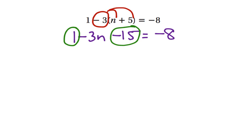So 1 minus 15, or negative 15 plus 1, gives us negative 14. We have negative 3n minus 14 equals negative 8.